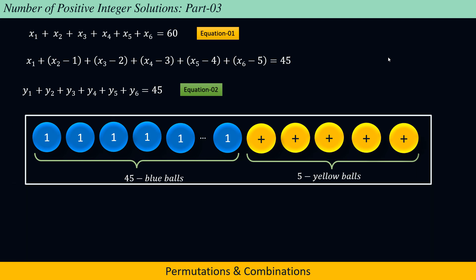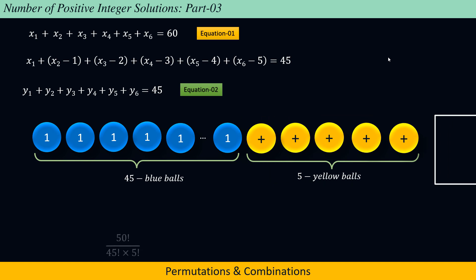The total number of ways of arranging 50 balls in which 45 are of one kind and 5 are of a second kind is equal to 50 factorial divided by the product of 45 factorial and 5 factorial.